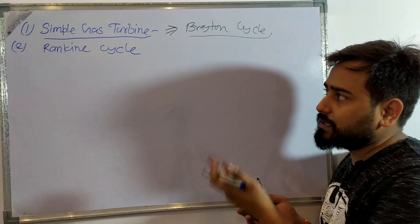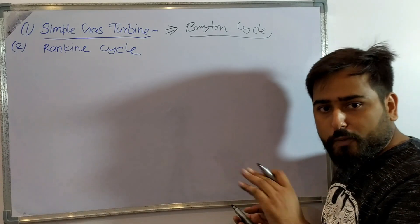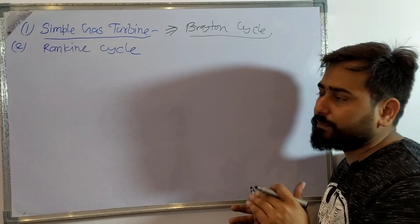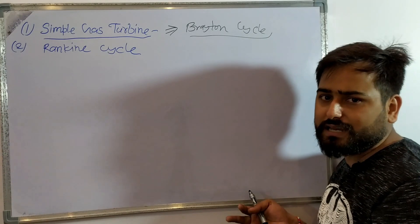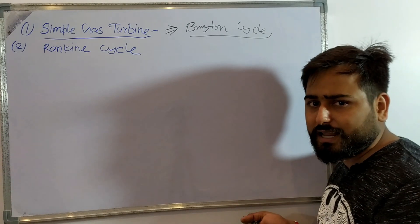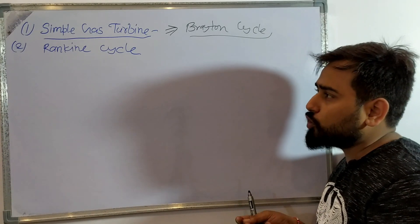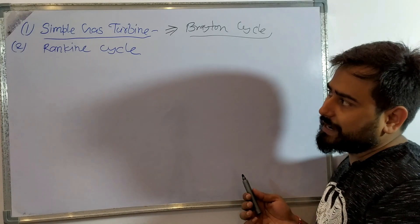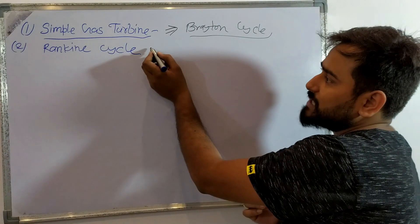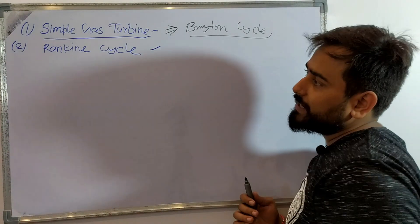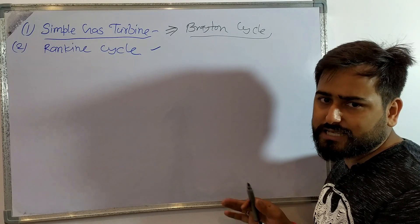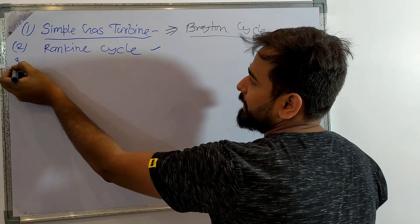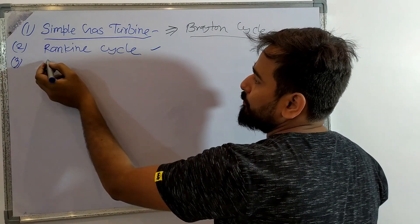So if you have RAC, then the reverse Brayton cycle is just the opposite. If you have VCRS, then the reverse Rankine cycle is just the opposite — same concept. We will talk about enthalpy and temperature. Rankine cycle is our second chapter and there will be many things like Regeneration, Reheating, and Combination — we will discuss all of these.